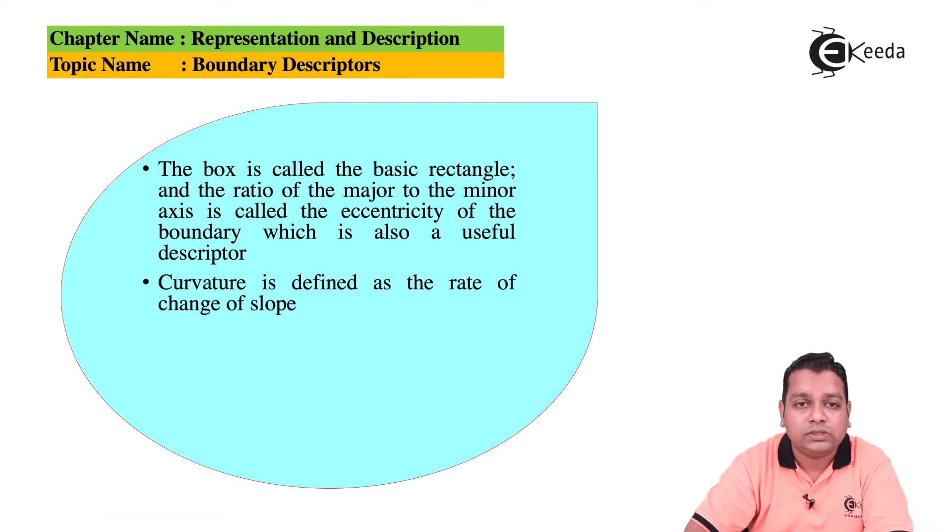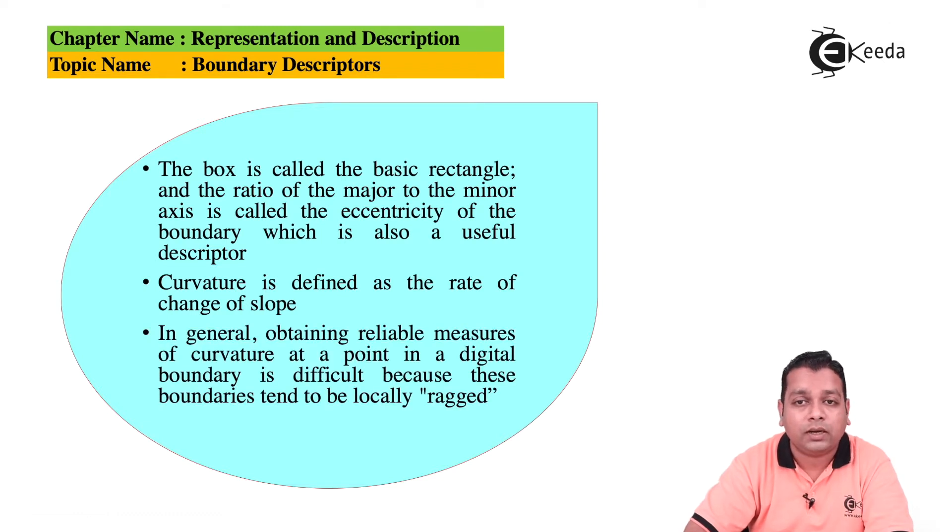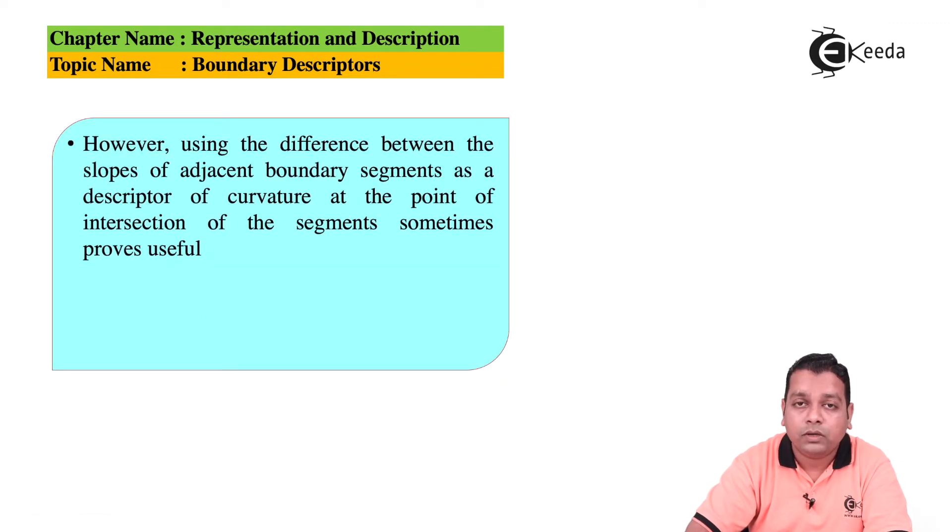Curvature is defined as the rate of change of slope. In general, obtaining reliable measurements of such curvature at a point into the digital boundary is difficult because these boundaries tend to be locally ragged. However, using the difference between the slopes of adjacent boundary segments as a descriptor of curvature at the point of intersection of the segments sometimes proves useful.